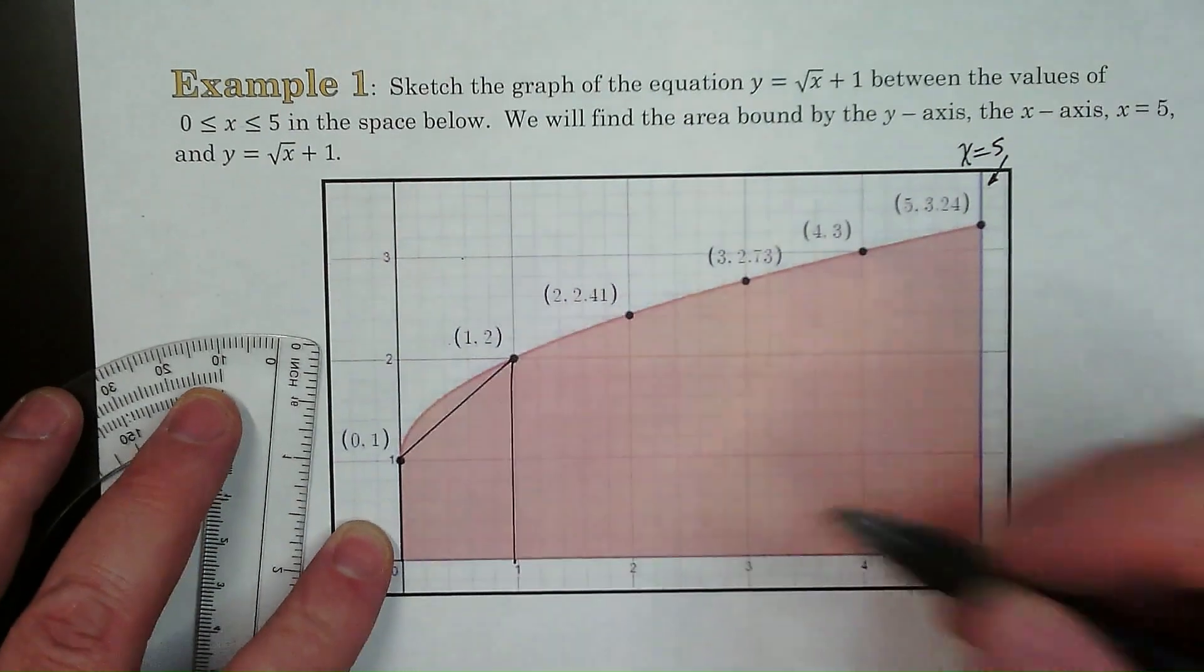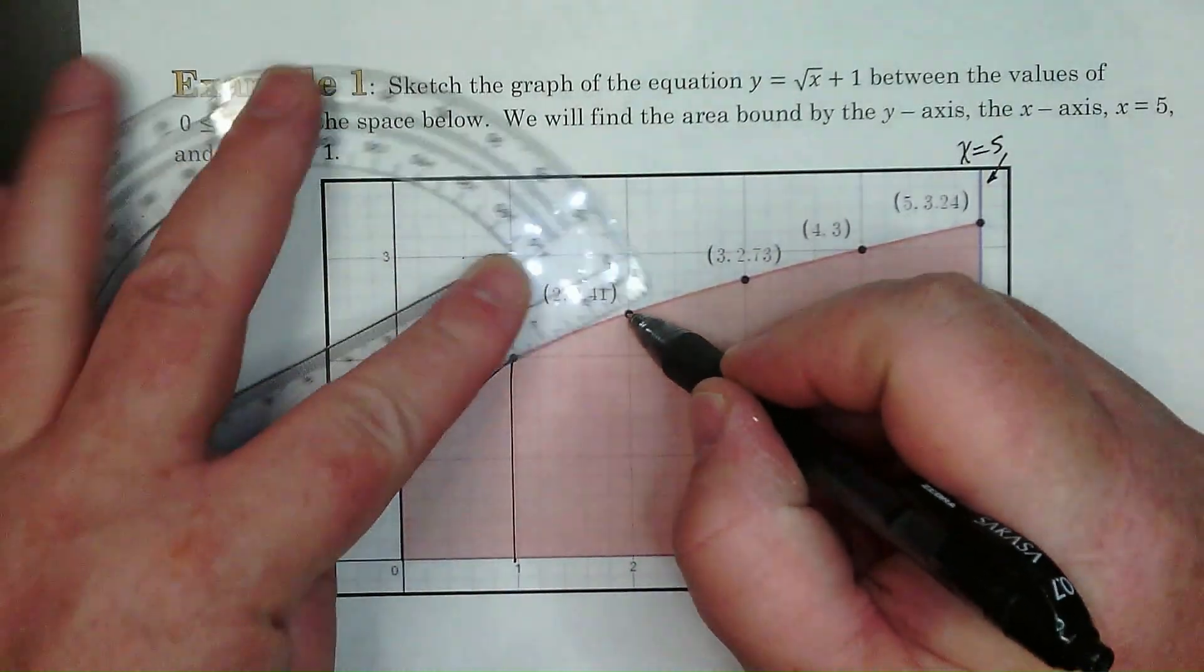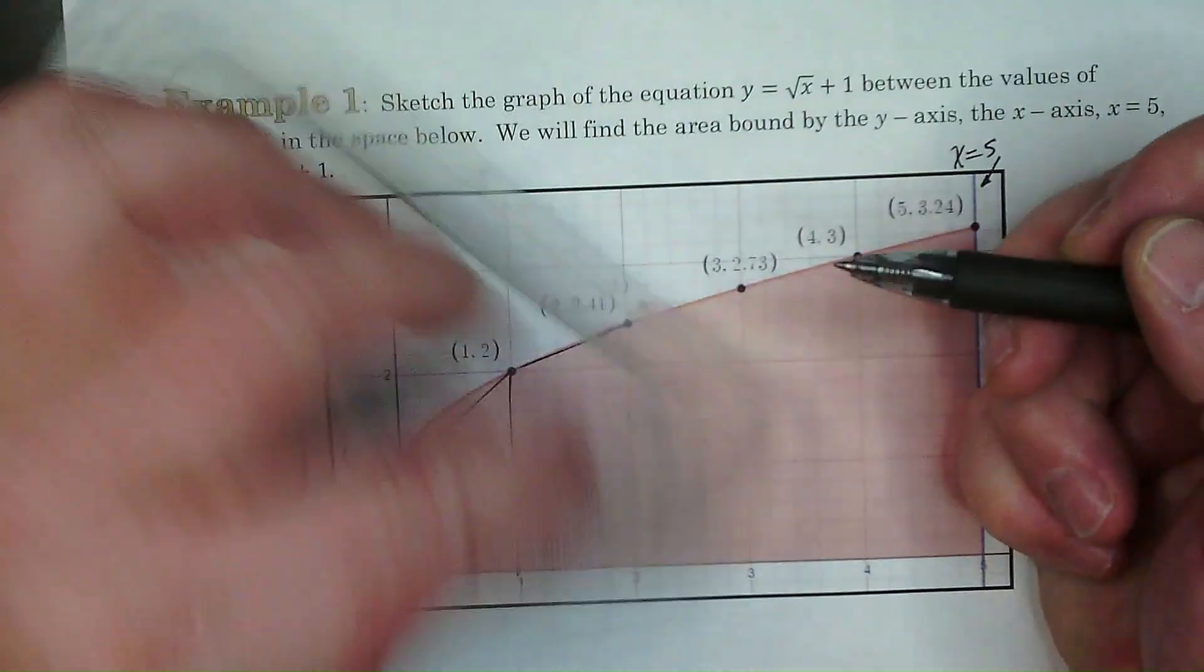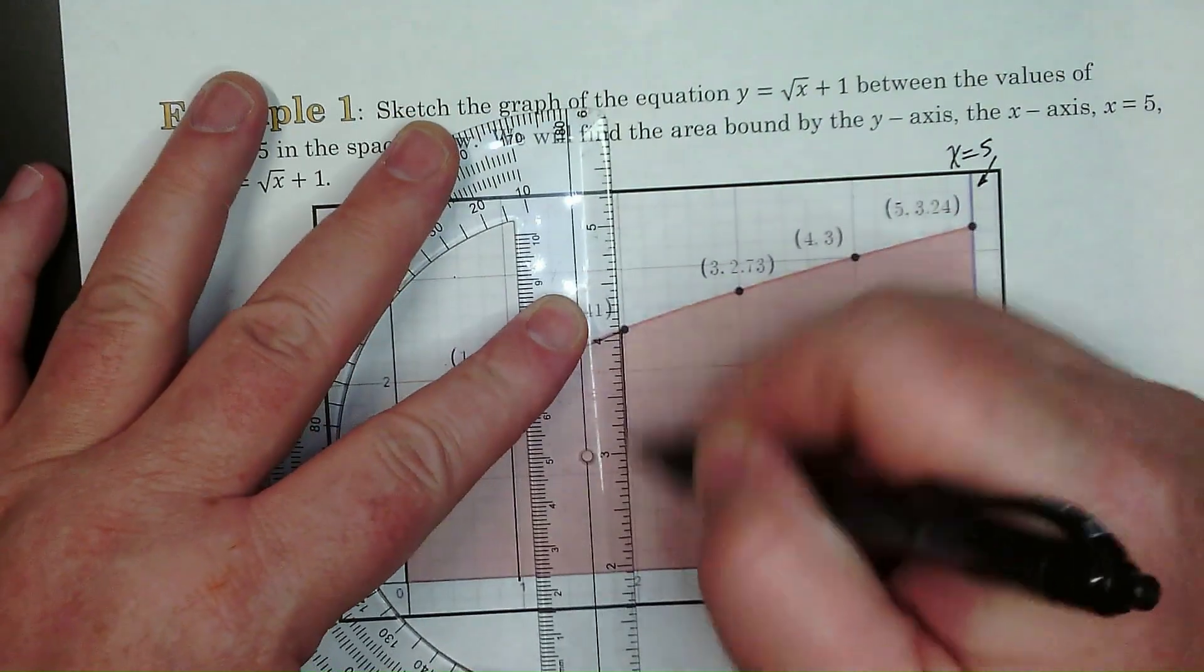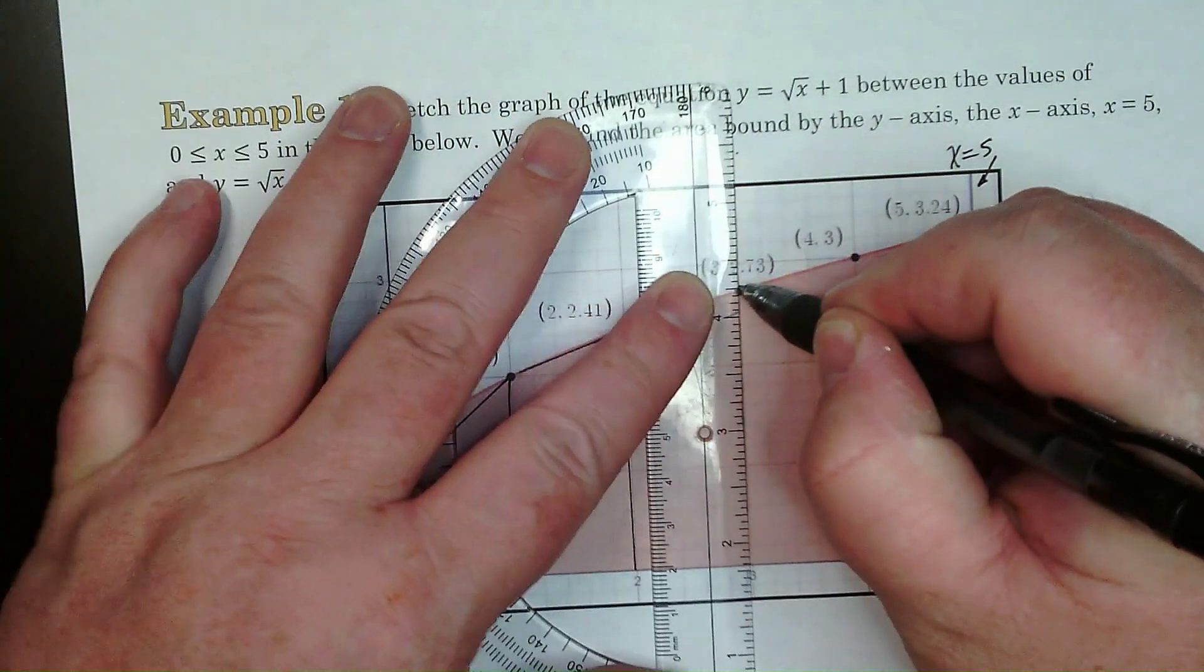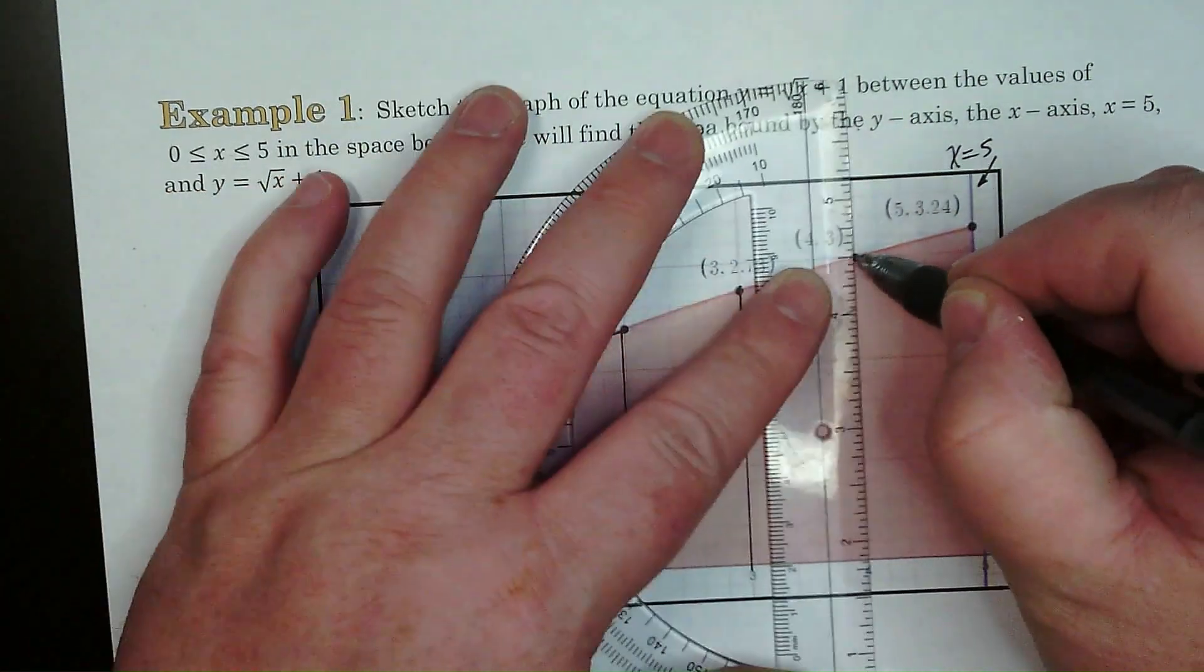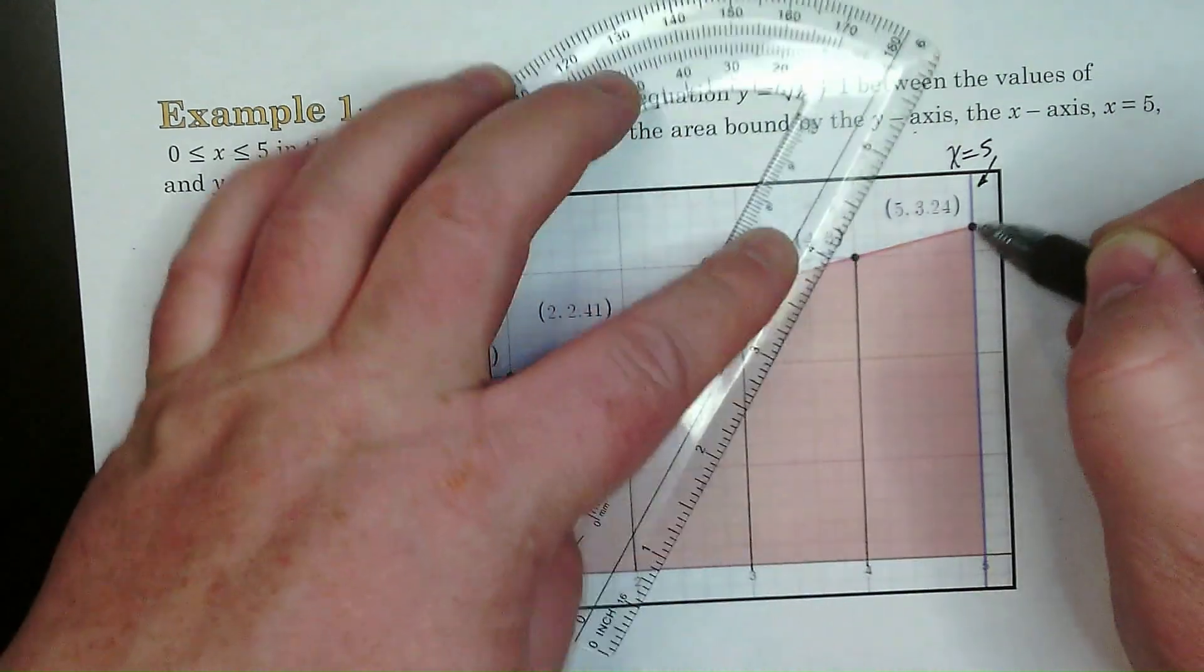So we've got one trapezoid there. There's going to be another one right here and like this right here. And then a third and a fourth and a fifth right there.